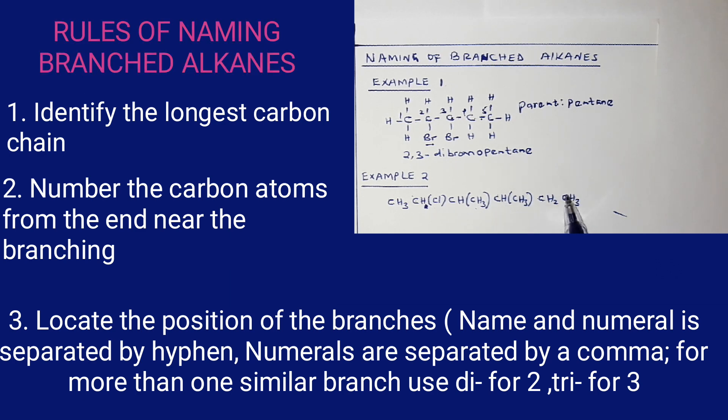So from the right hand side, the first branch is carbon number three. From the left hand side, the branch is at the second carbon atom. So it means I start numbering here: one, two, three, four, five, six.